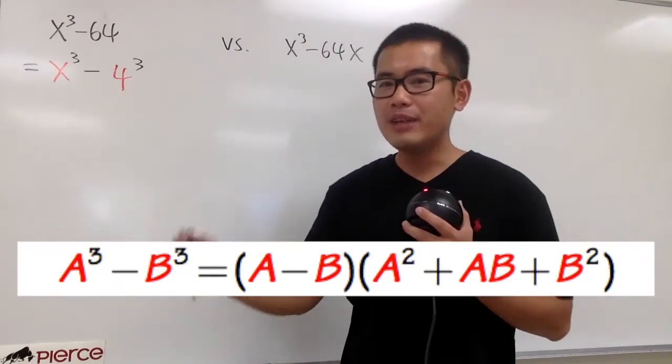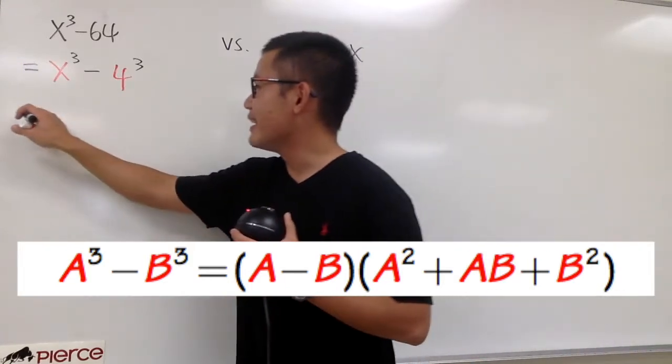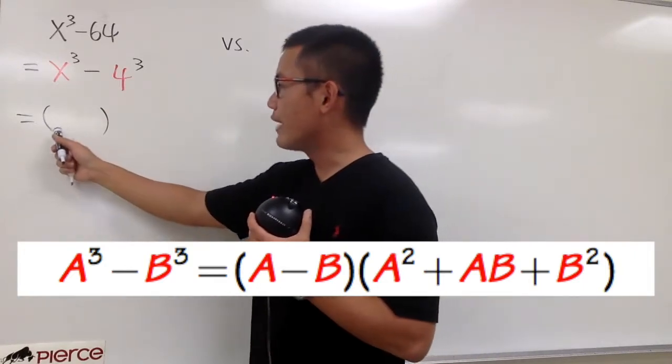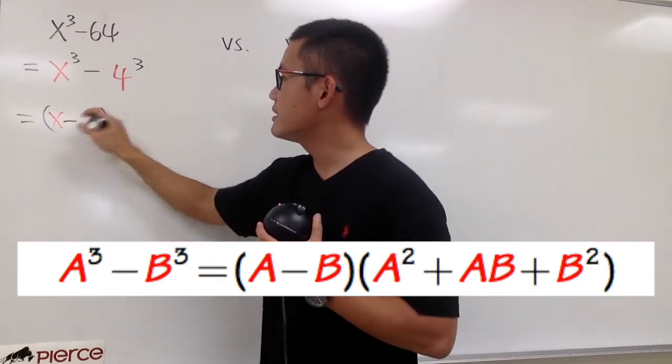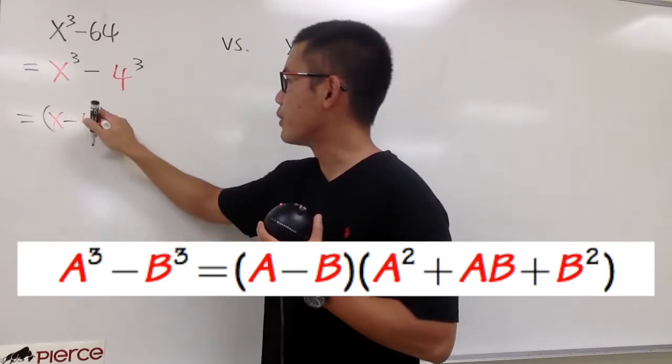a to the 3rd power minus b to the 3rd power is that. Okay, let's go ahead and do it. We will have the first little parenthesis, which we'll have to put down x minus 4. And this is the a minus b part for the first parenthesis.